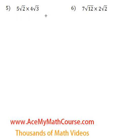Question number five. Let's multiply some more radicals. We have 5 times the square root of 2 times 4 square root of 3.